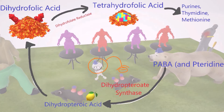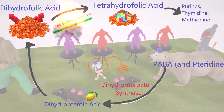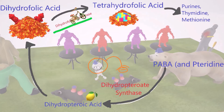It's worth mentioning that trimethoprim is another antibiotic used to block folate synthesis, but it blocks a different step — it blocks dihydrofolate reductase. We can imagine a tricycle for trimethoprim jumping in and exploding the dihydrofolate reductase.